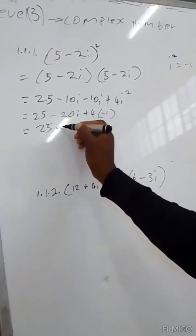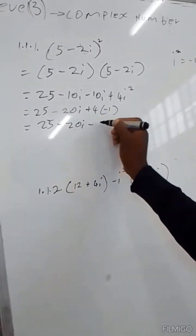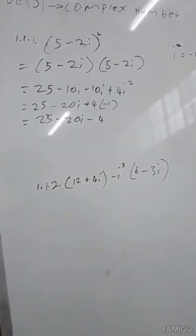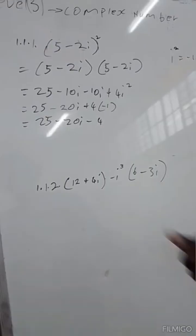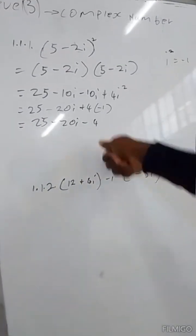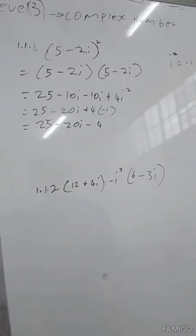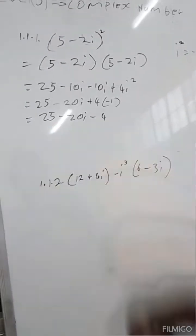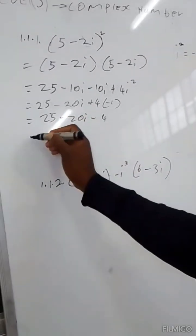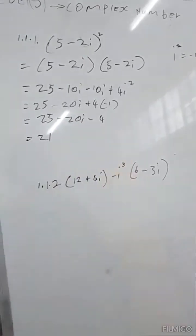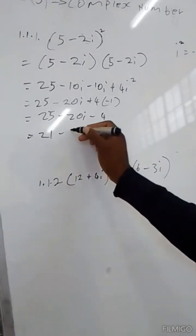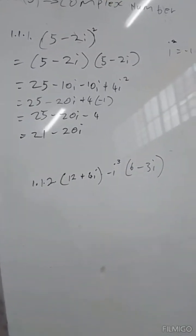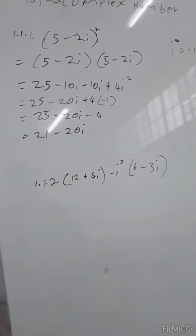Therefore, negative 1 times 4 equals negative 4, which gives us 25 minus 20i minus 4. We collect like terms: 25 minus 4 equals 21. So the final answer is 21 minus 20i.